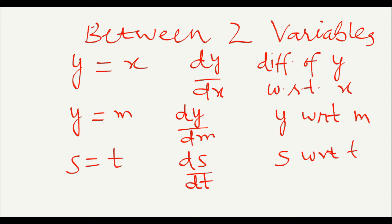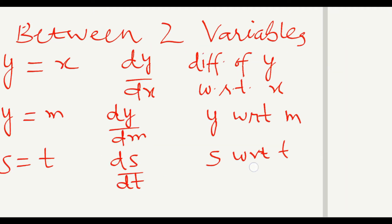So observe: when the variables are y and x, we write dy upon dx. When the variables are y and m, we write dy by dm. If the variables are s and t, then we write ds upon dt — that is, differentiation of s with respect to t.